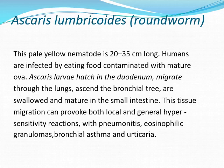ننتقل إلى Ascaris lumbricoides أو الـ roundworm. هذا الـ pale nematode يصل طوله إلى 20-35 سنتيمتر. Humans are infected by eating food contaminated with mature ova. The Ascaris larvae hatch in the duodenum, migrate through the lungs, ascend the bronchial tree, are swallowed, and mature in the small intestine. This tissue migration can provoke both local and general hypersensitivity reactions with pneumonitis, eosinophilic granulomas, bronchial asthma, and urticaria.